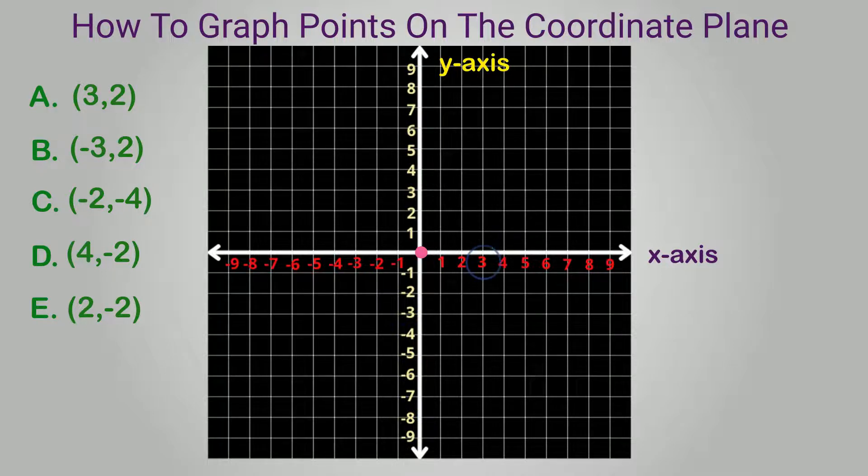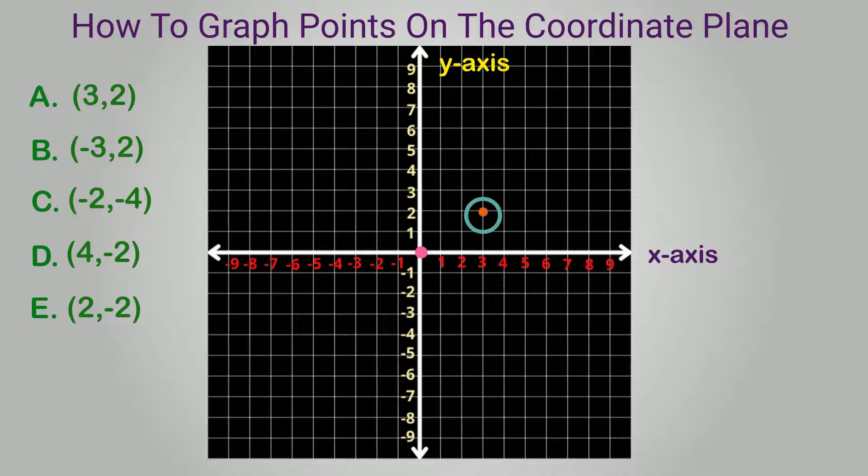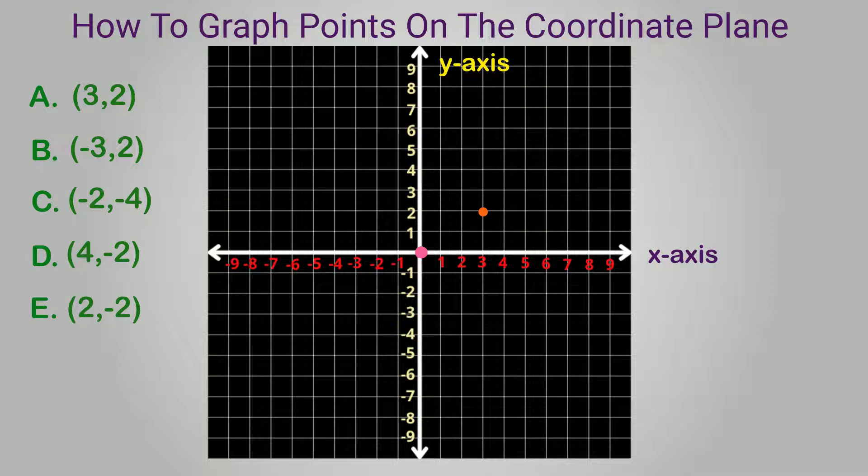We move to the right 3, as it's positive. We move up 2, as it's also positive. This point is located in quadrant 1. We place a point at the intersection of these two values, and we're done.